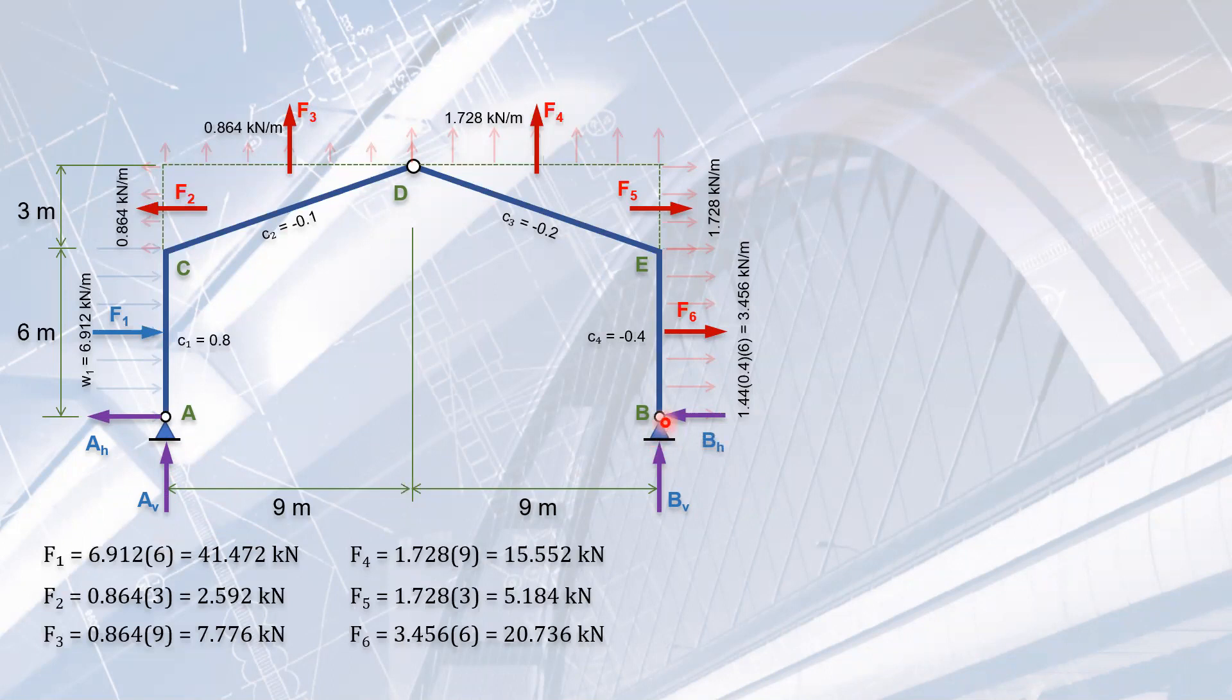We only have three equations readily available from equilibrium: horizontal equals zero, vertical equals zero, and moment equals zero. Our fourth equation comes from the hinge at D, where the moment is zero. This provides one additional equation, making the structure determinate. Don't worry about the direction of reactions; if you get a negative answer, it means the assumed direction is reversed.